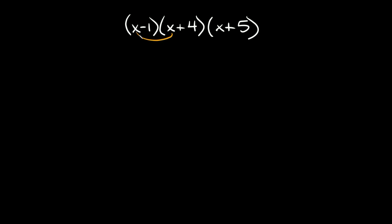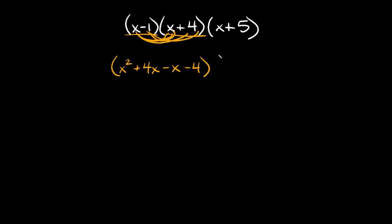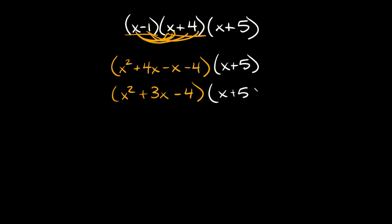I'm going to FOIL (x minus 1) and (x plus 4) together. First: x squared. Outer: positive 4x. Inner: negative 1 times x equals minus x. Last: negative 1 times 4 equals negative 4. Simplifying: x squared, then 4x minus x equals positive 3x, and then minus 4. We're still multiplying by (x plus 5).